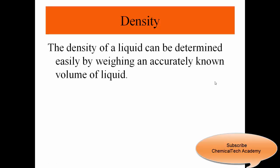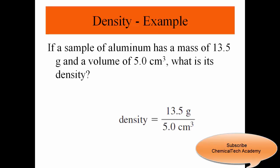The density of a liquid can be determined easily by weighing an accurately known volume of liquid. For example, if a sample of aluminum has a mass of 13.5 grams and a volume of 5 cubic centimeters, we calculate 13.5 grams divided by 5 cubic centimeters, which gives us the density in grams per cubic centimeter.